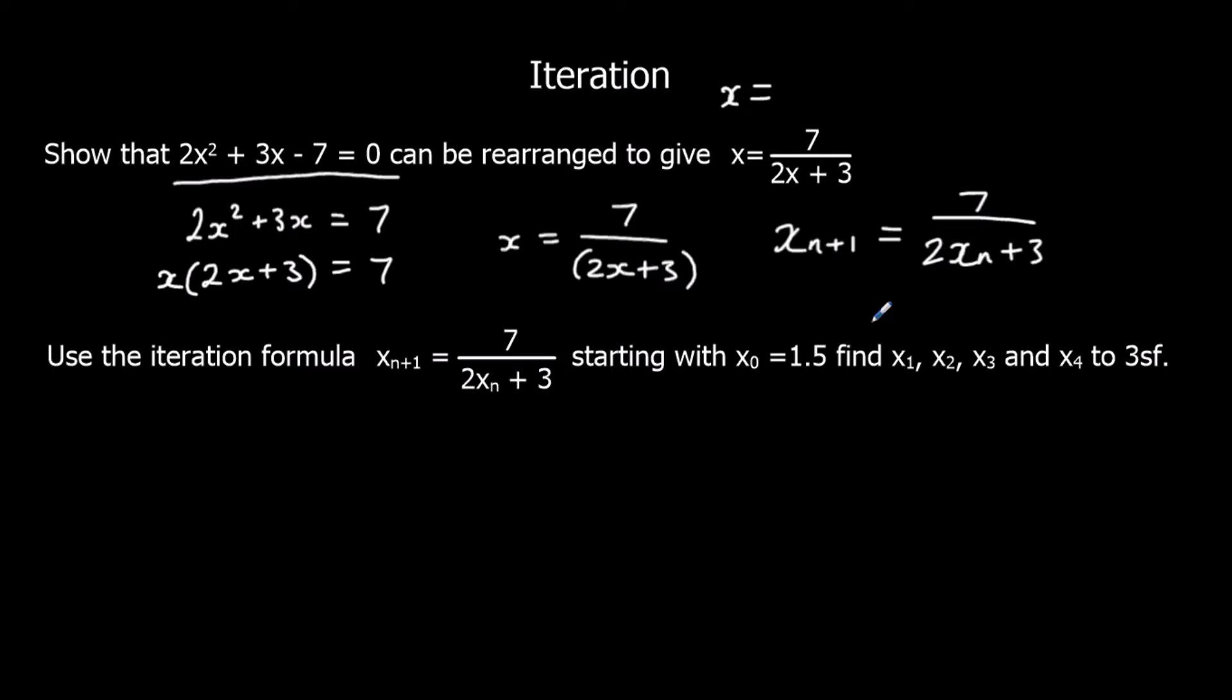So let's look at using an iteration formula now. We're going to use the iteration formula that we've just found, starting with x0, which is going to be 1.5, to find the first four iterations, x1, x2, x3, and x4.